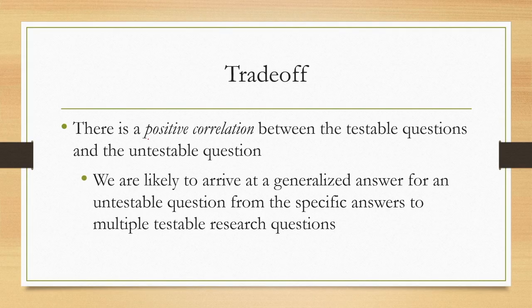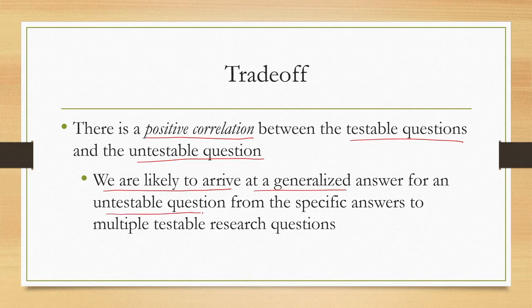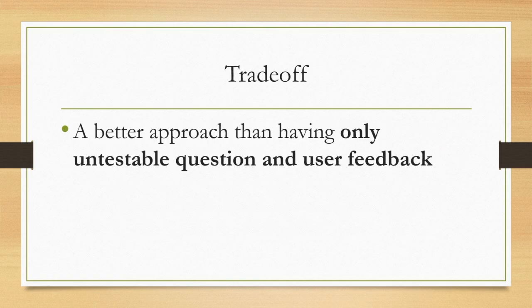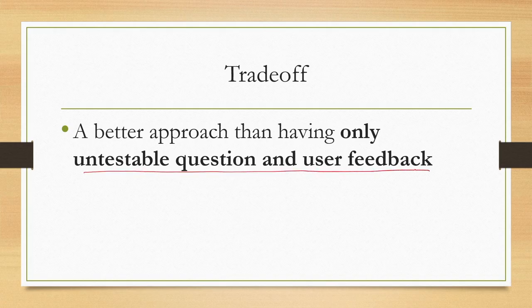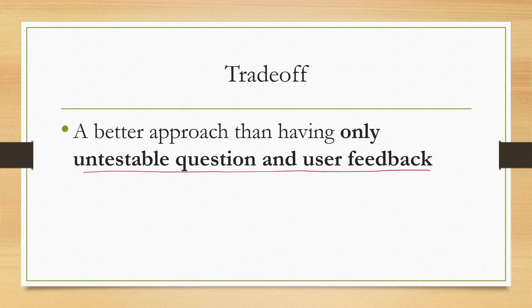There is a positive correlation between testable and untestable questions. We are likely to arrive at a generalized answer for an untestable question from the specific answers to multiple testable research questions. Because that correlation exists, we can have multiple testable questions and from those draw a conclusion for the untestable question. This is better than having only an untestable question and relying on vague user feedback.